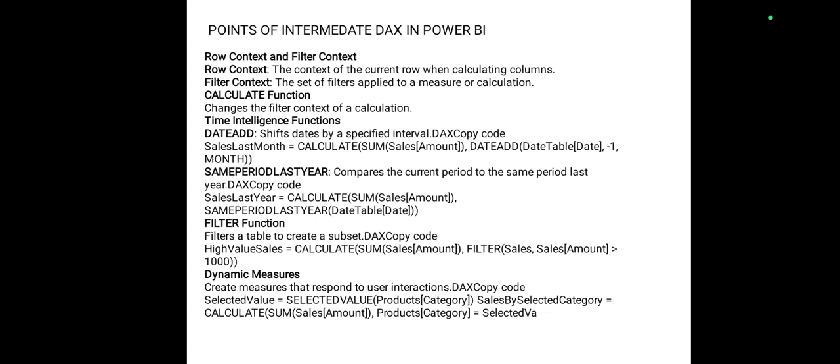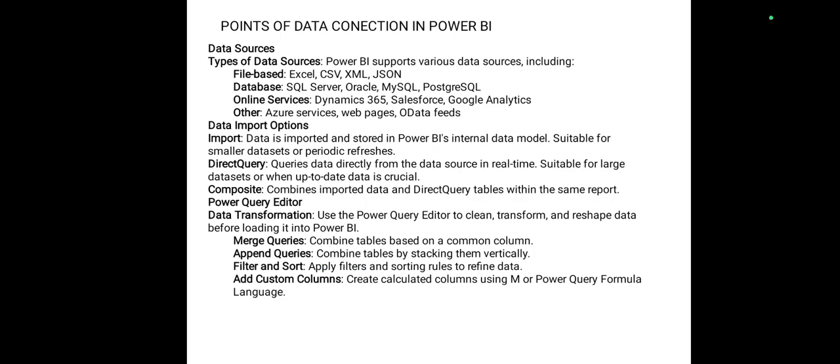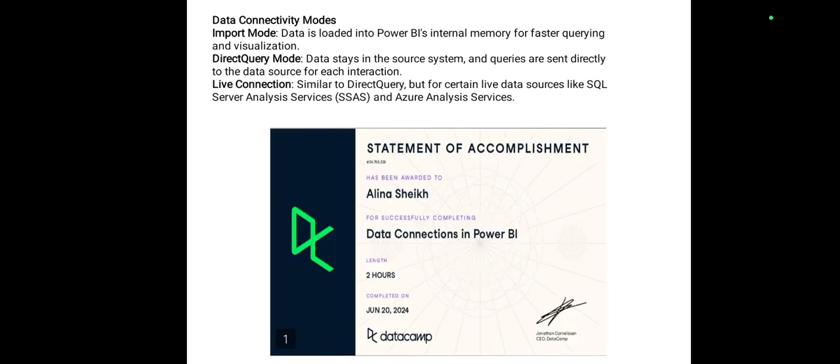Points of intermediate data in Power BI include raw content, filter context, CALCULATE functions, time intelligence functions with filter functions, dynamic measures, and variables. Points of data connection in Power BI include data sources, types of data sources — file-based, database, online services — and data import options including import, DirectQuery, and composite modes. Power Query Editor handles data transformation including merge queries, append queries, filter and sort, and adding custom columns. Data connectivity has two modes: import mode and direct query mode.